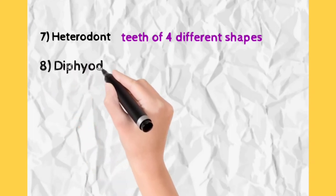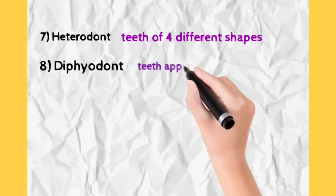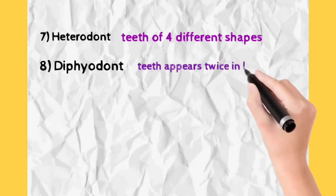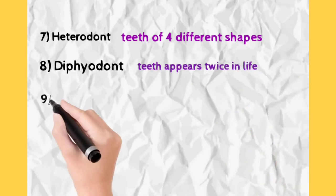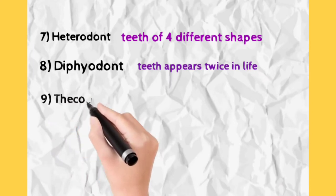Then comes diphyodont. Di means twice, phyo means appears, dont means teeth. We know that our teeth appear usually twice in our life. First is the milk teeth and the other is permanent teeth. That is why diphyodont.